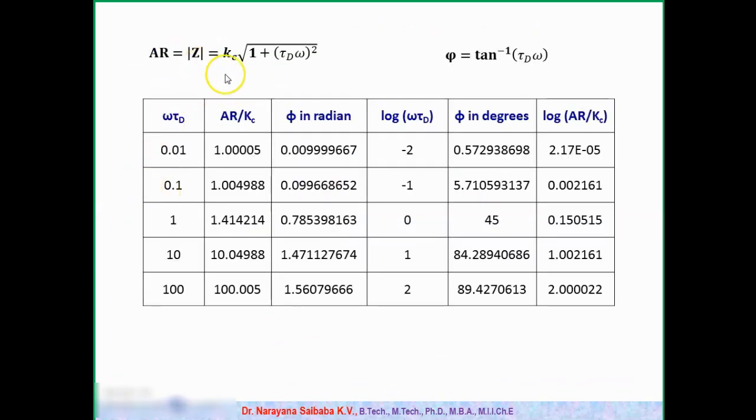Once we have these formulas for AR and phi, next we can assume different values of omega and we can calculate the corresponding AR and phi values. If you observe in these formulas, we have tau_d*omega in both AR as well as phi formula. So instead of assuming omega as independent variable, you can assume omega*tau_d as independent variable for simplicity. Similarly, Kc value can take left hand side, so that we will get AR/Kc value. We assume different values of omega*tau_d and corresponding AR/Kc value and phi values we can calculate. From this data, you can assume that here the phi value, phase angle is moving from 0 to 90 degrees for PD controller.